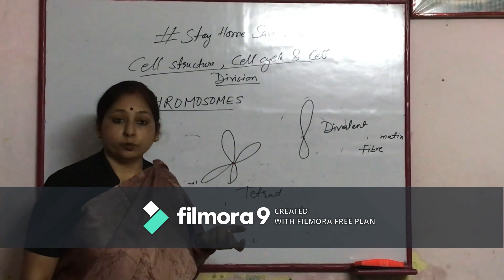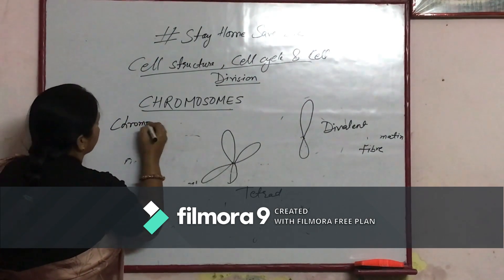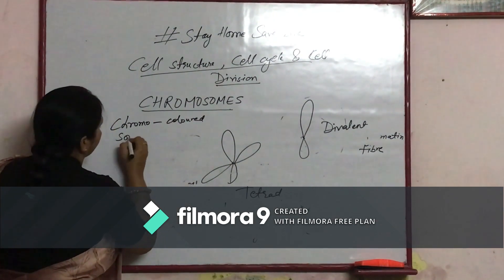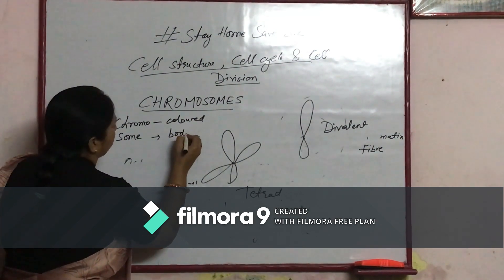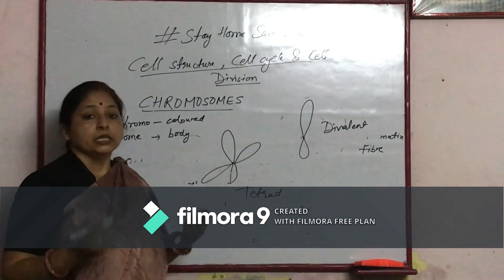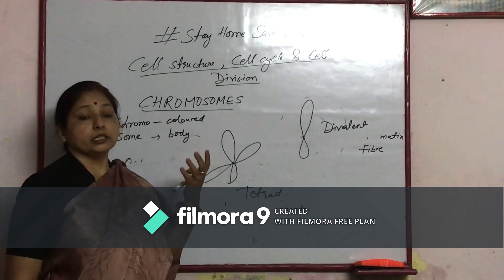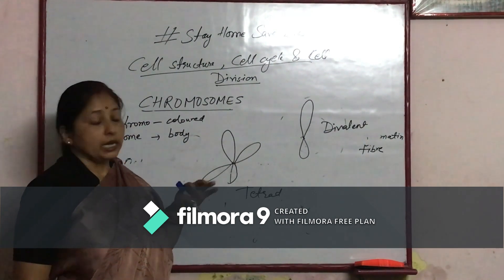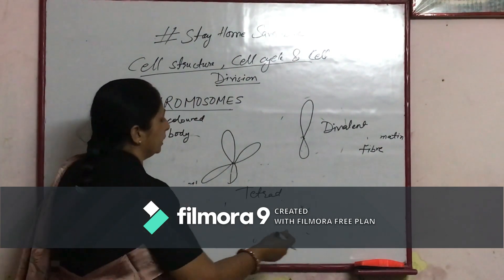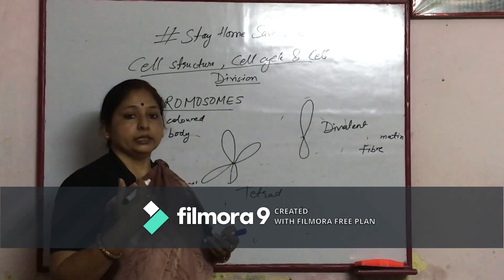Now, chromatin fibres — the word chromosome: chromo means color, and some means body. So the name is chromosome, meaning colored body. In their condensed form, these chromatin structures pick up certain dyes and they are called chromosomes, as they are distinctively and easily seen under the microscope.